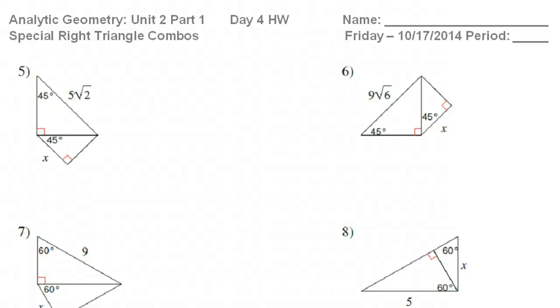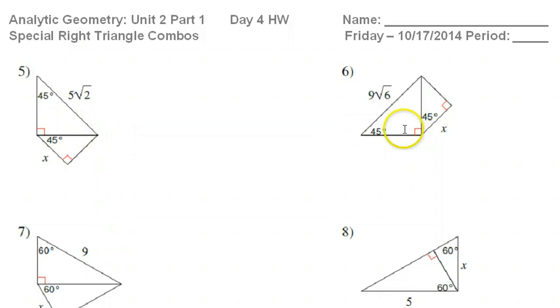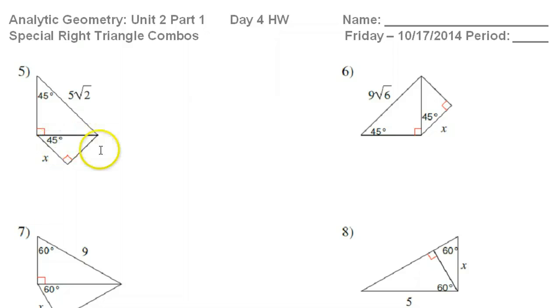This is part two of our lesson on solving special right triangle combos — that's two special triangles stuck together, and you have to basically solve two problems in a row to get to your final answer.